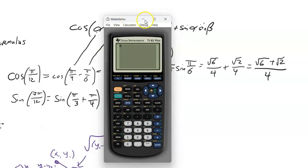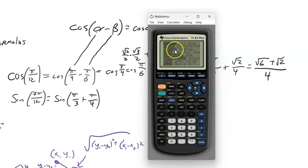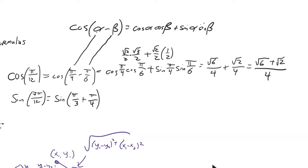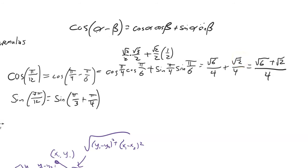I can check this: cosine of pi over 12 on the calculator gives the same decimal as (root 6 + root 2) over 4 — they match. That's a good way to verify your answer. For the sum formula, one way this is written uses a plus-minus symbol for the angle, and then a minus-plus symbol for the second term to show they are always opposites from each other.